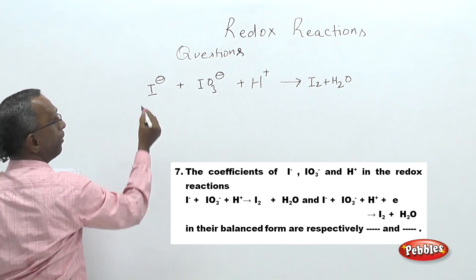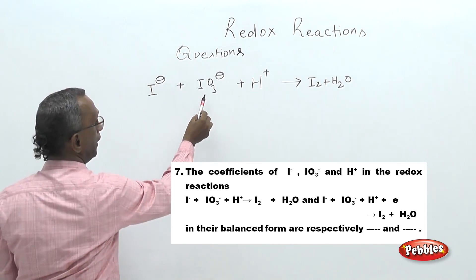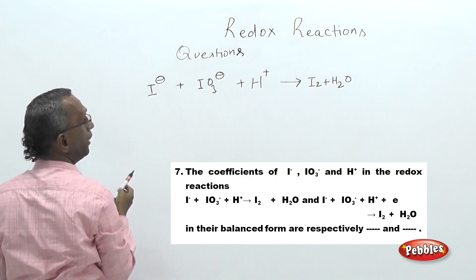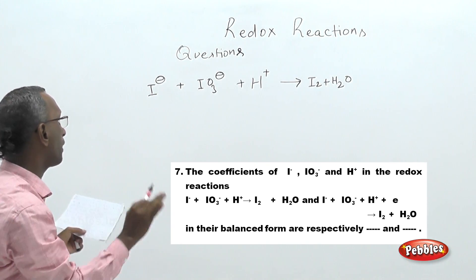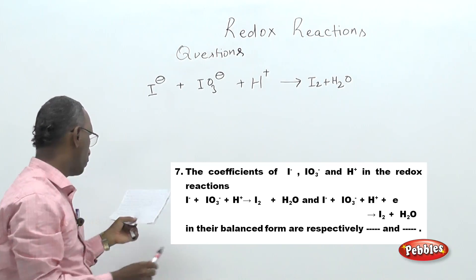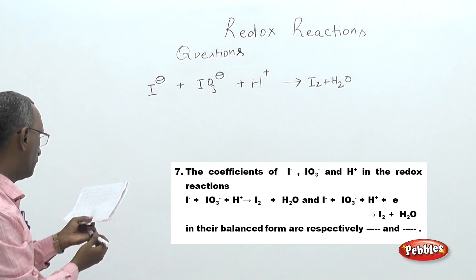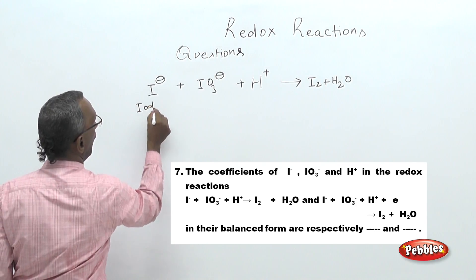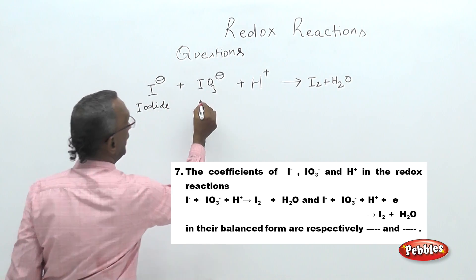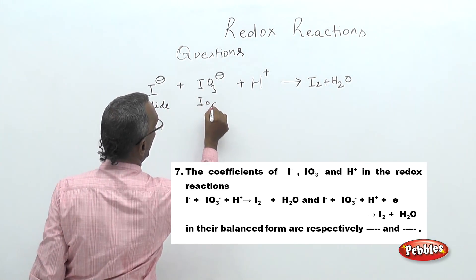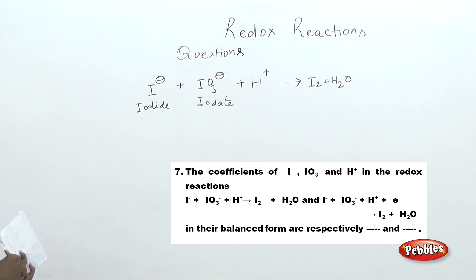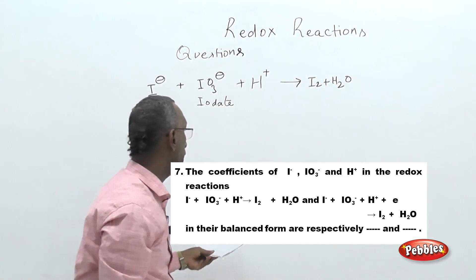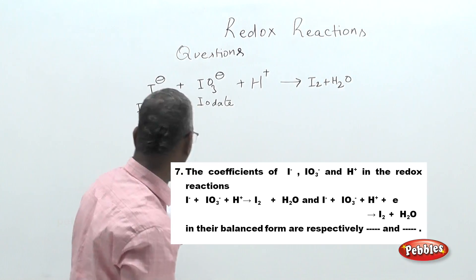The coefficients are not yet balanced. There are three oxygen atoms on the reactant side but only one on the product side — it is not balanced. However, products and reactants are in a fixed proportion. Iodide reacts with iodate in the presence of acid to release iodine.